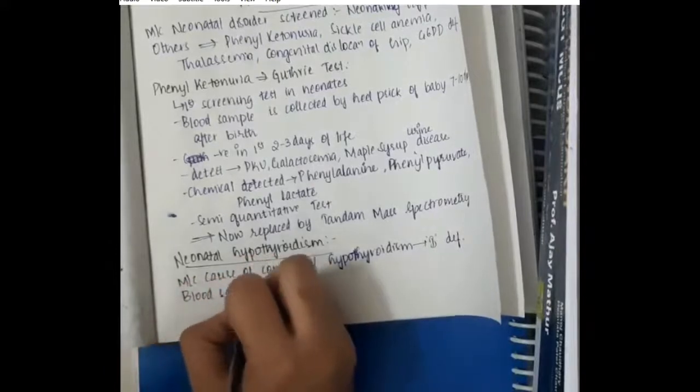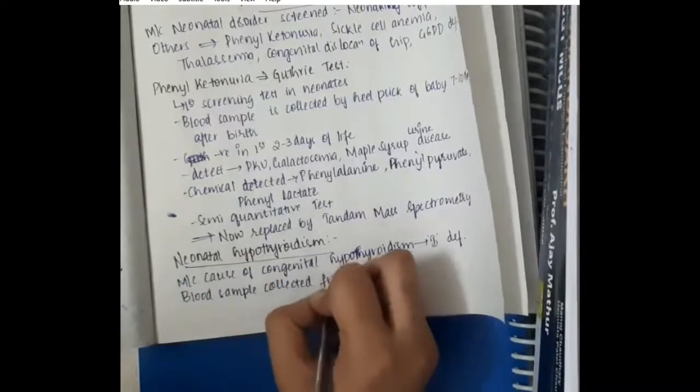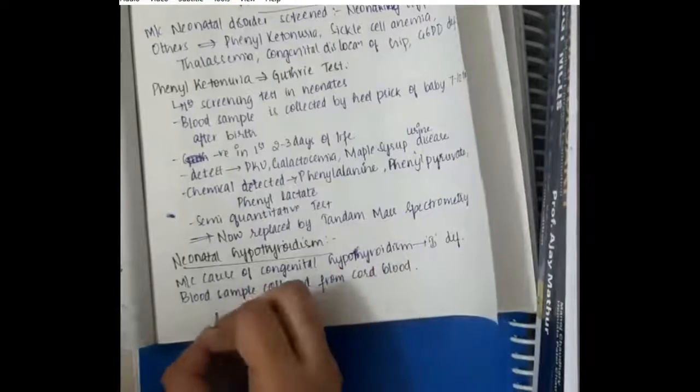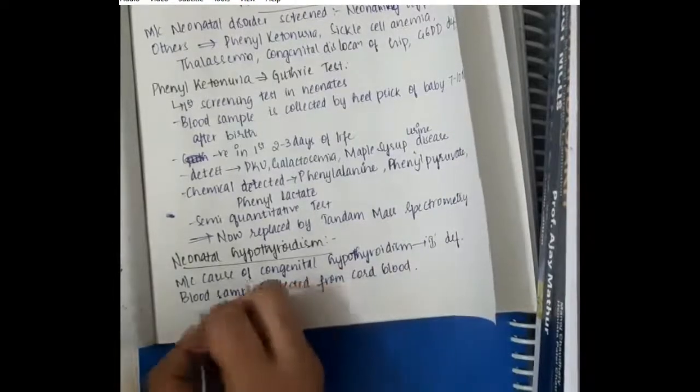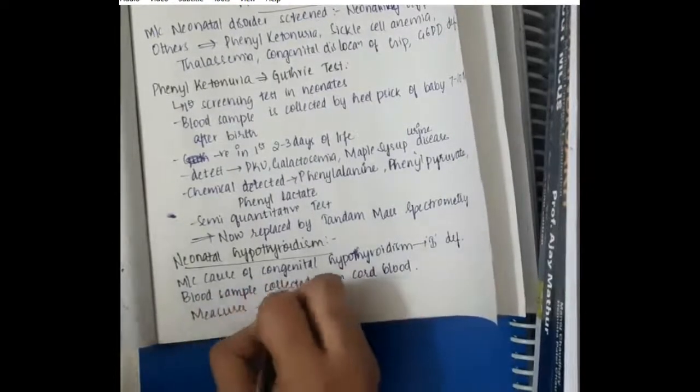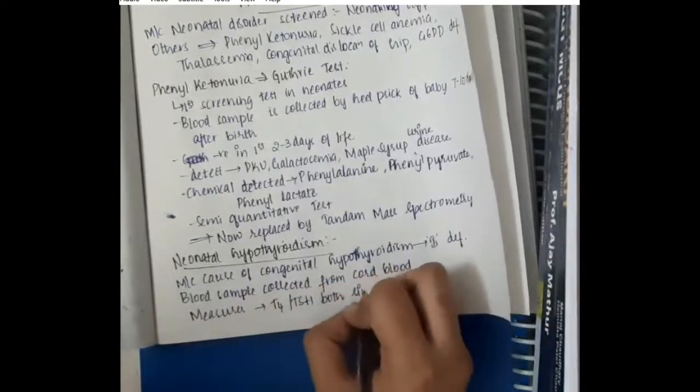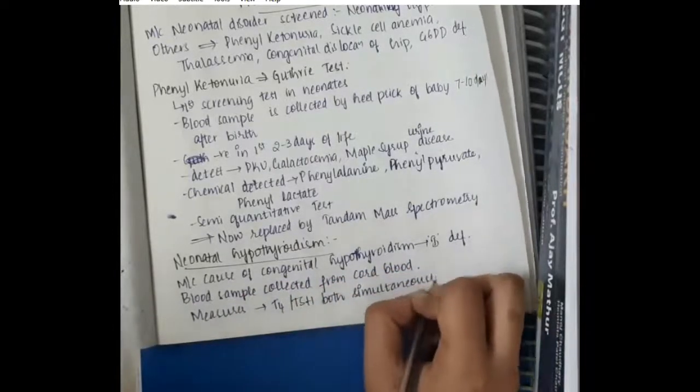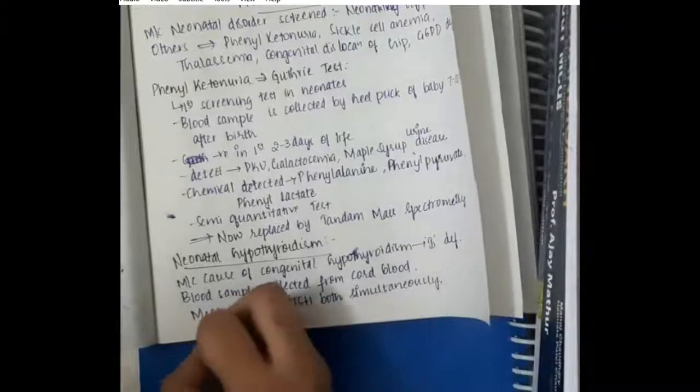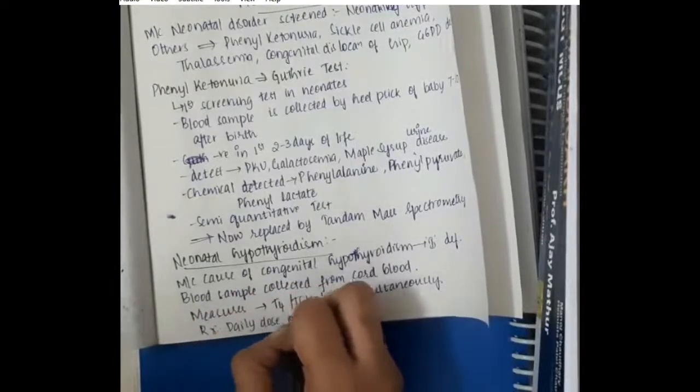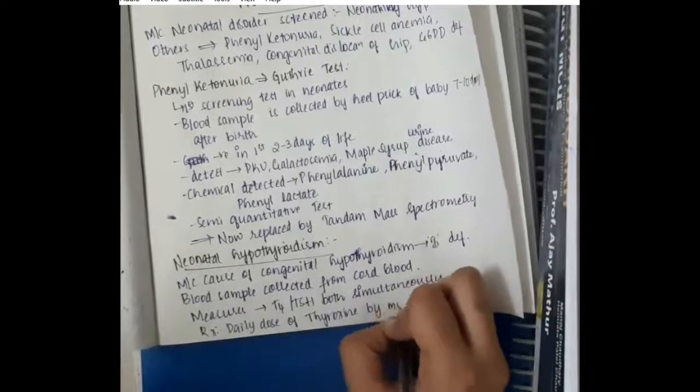Here, the blood sample is collected from cord blood and from that blood sample, we will measure T4 and TSH levels both simultaneously. And if we find out that the baby has hypothyroidism, then we give daily doses of thyroxine by mouth. This is about neonatal screening. Thank you for watching my lecture.